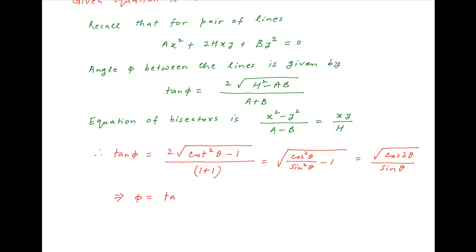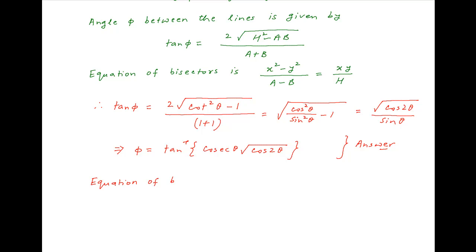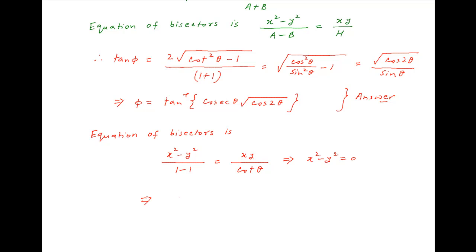Therefore, the angle φ between the pair of lines is tan⁻¹(√(cos 2θ) / sin θ). The equation of the bisectors of the given pair of lines is (x² − y²)/(1 − 1) = xy/cot θ, which implies x² − y² = 0. Therefore, the equations of the bisectors are x − y = 0 and x + y = 0.